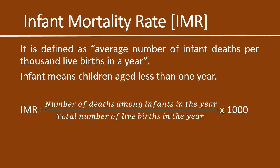The formula for IMR is: IMR equals the number of deaths among infants in the year, divided by the total number of live births in the year, multiplied by one thousand. This is the formula for infant mortality rate.